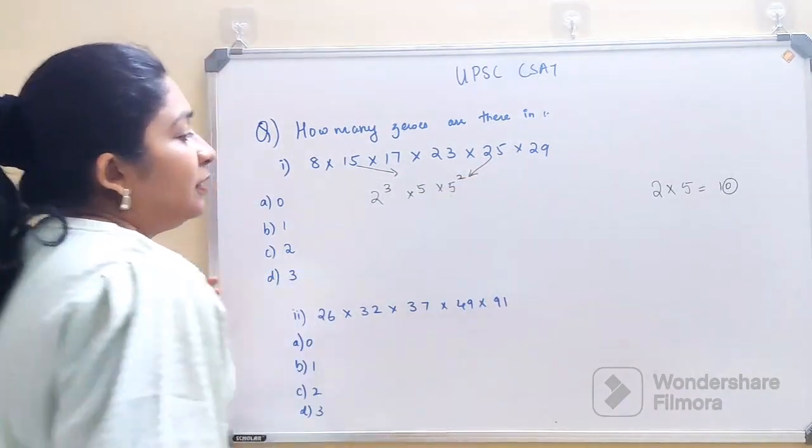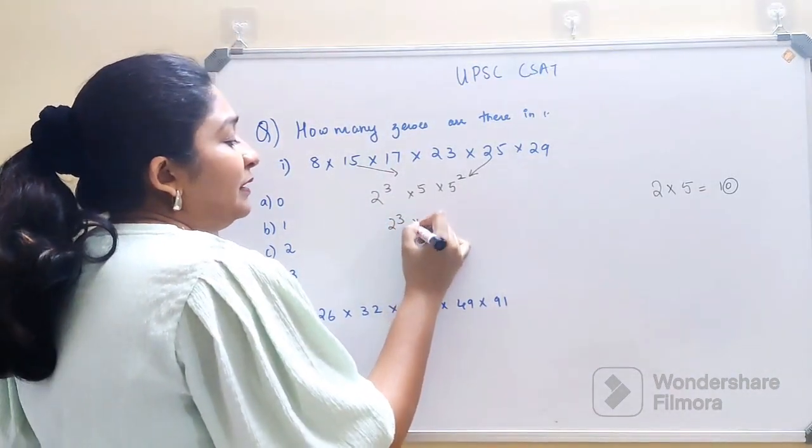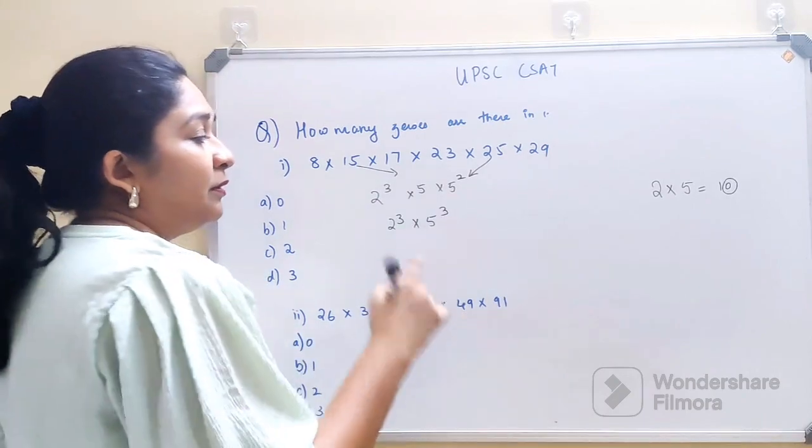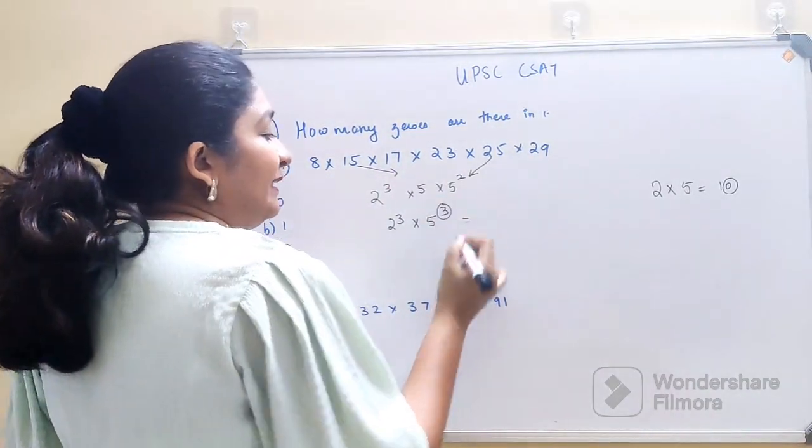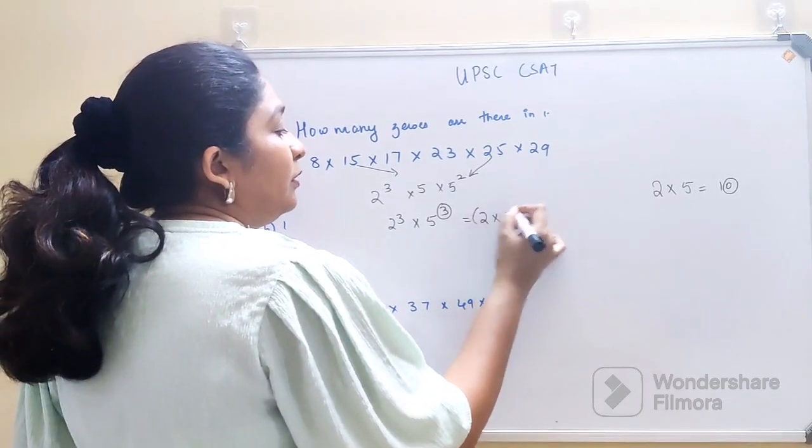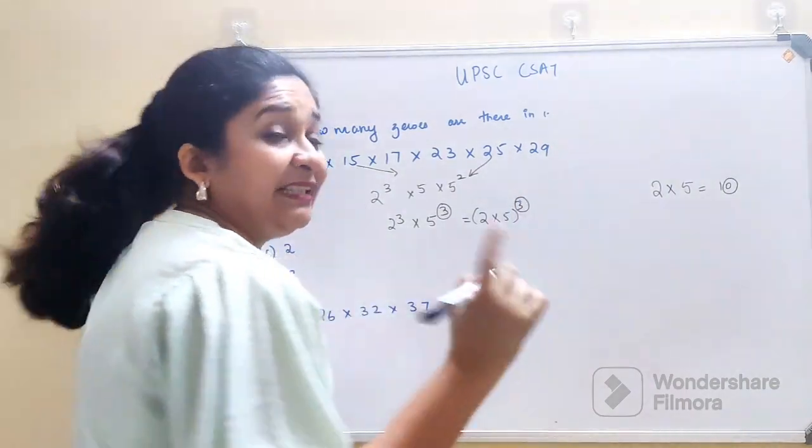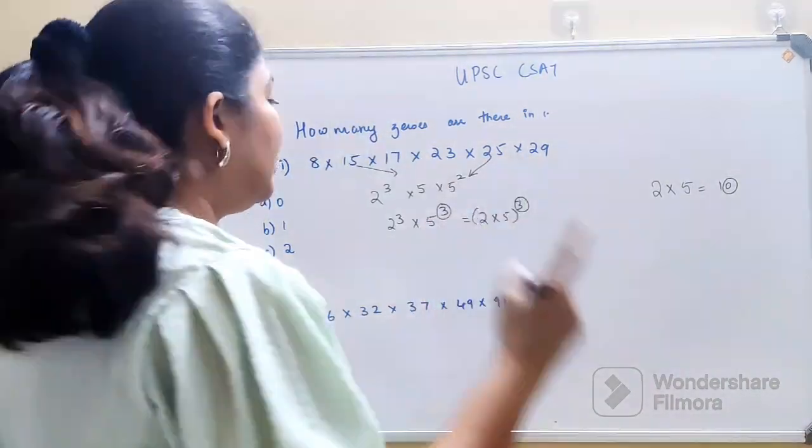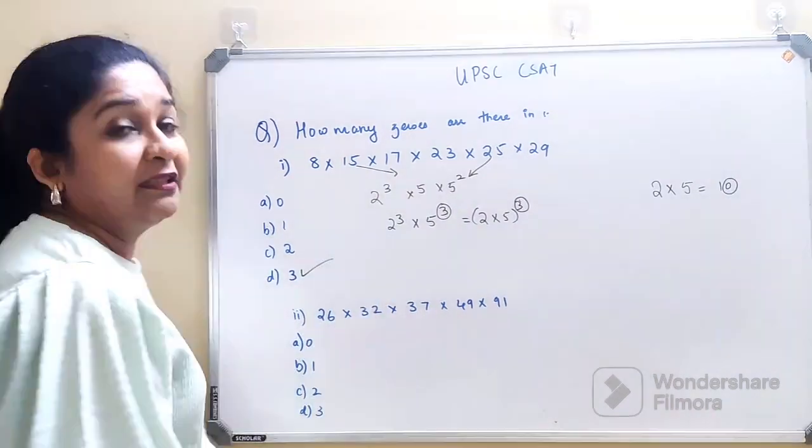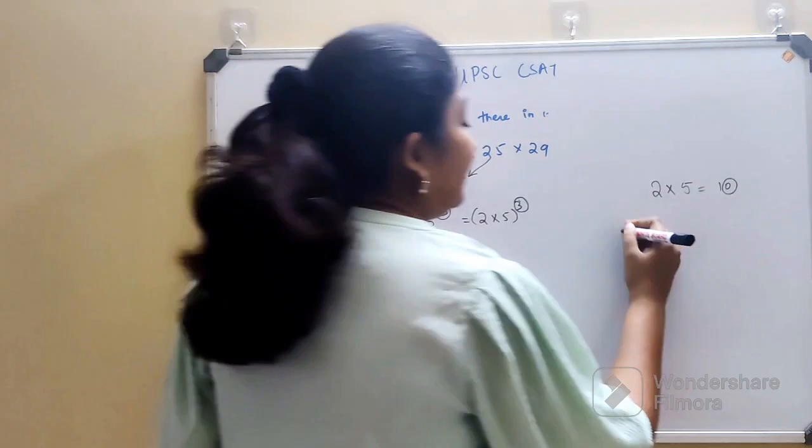So now if you see, we have 2³, then there is 5³. Basically, this is (2×5)³. This index will represent the number of zeros you'll have in this answer, so the answer is 3. Students, if you have liked this, please go ahead and hit the like button. At the end, I'm also going to put up a DIY question, which will be question number 3.